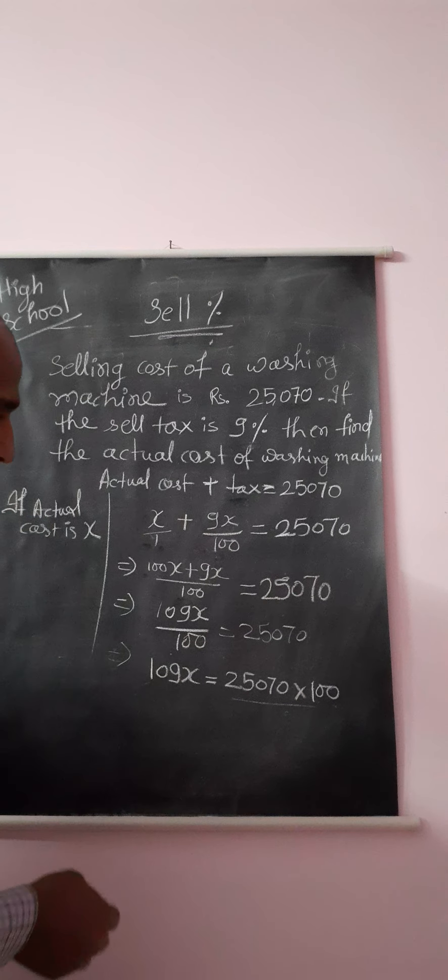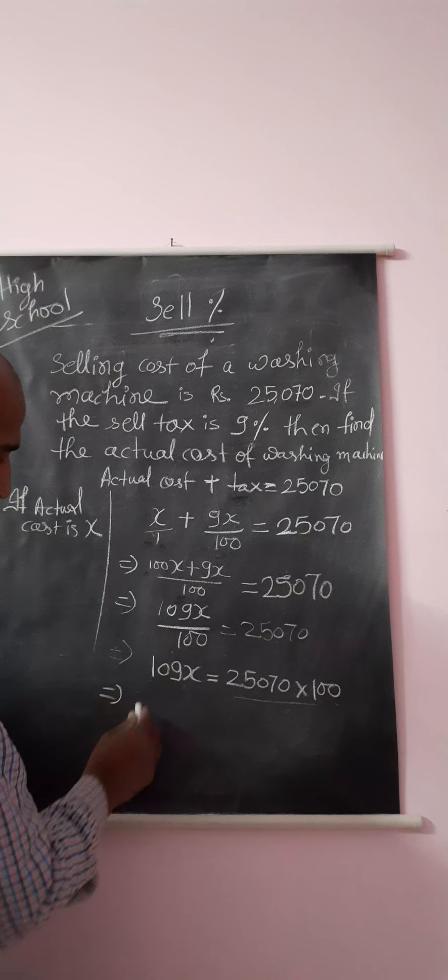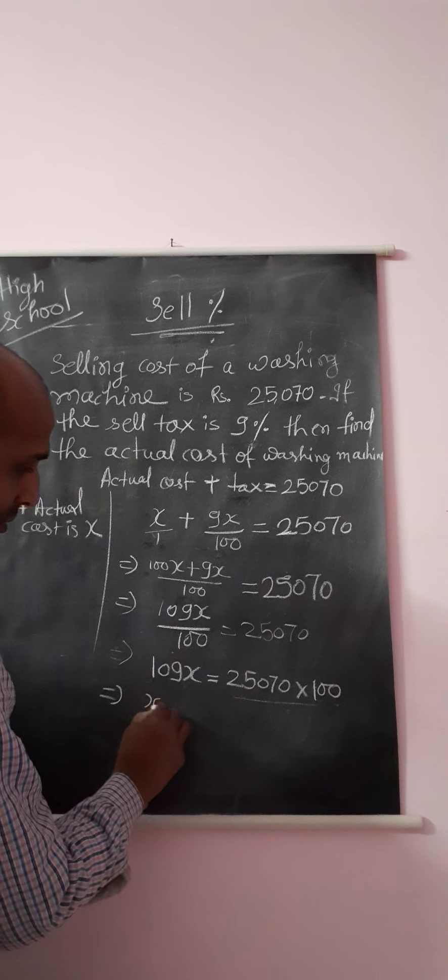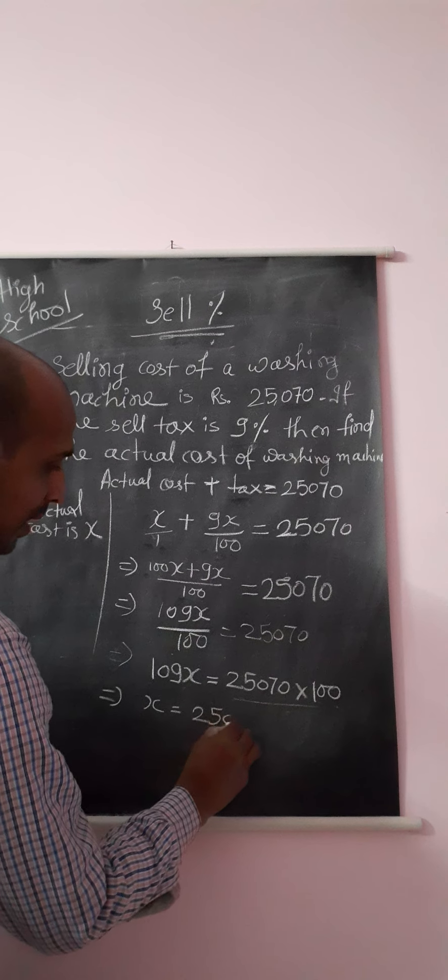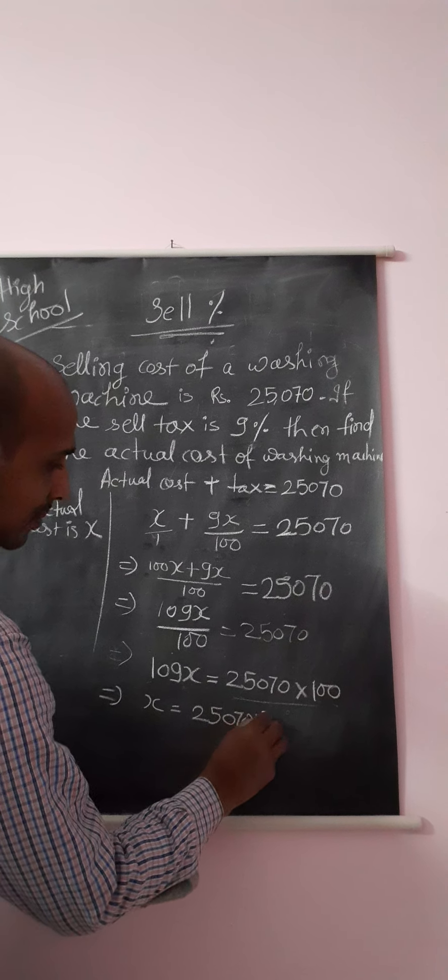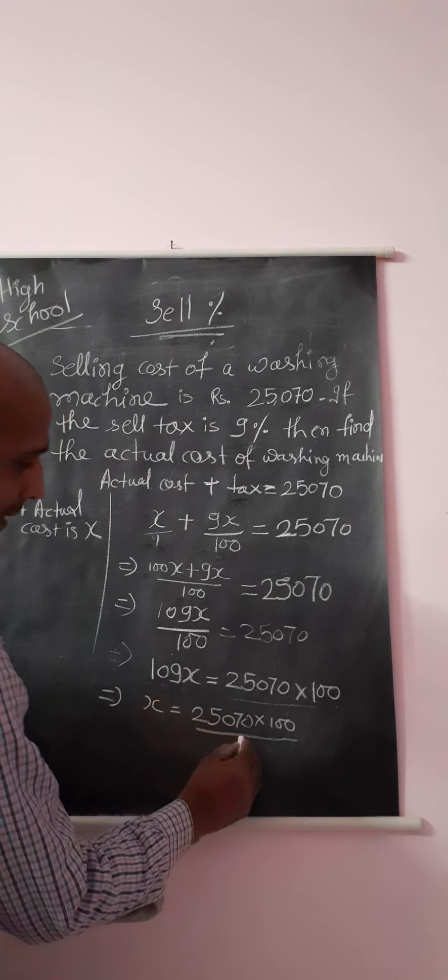If we are going to find the value of x, then we can write x equals 25,070 multiplied by 100 upon 109.